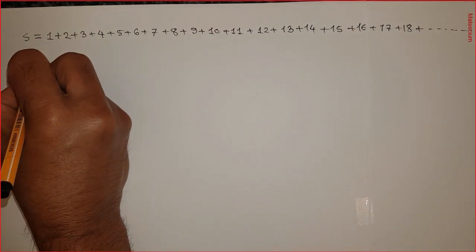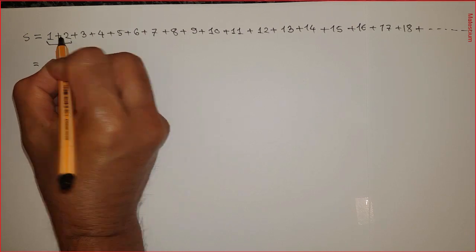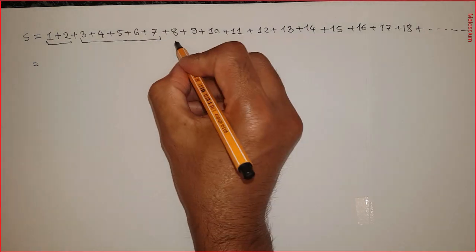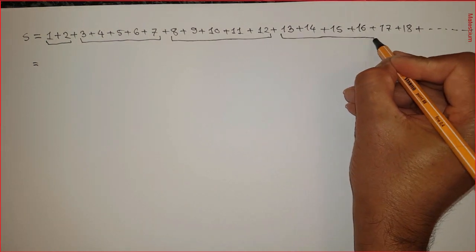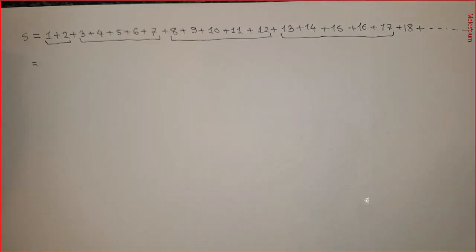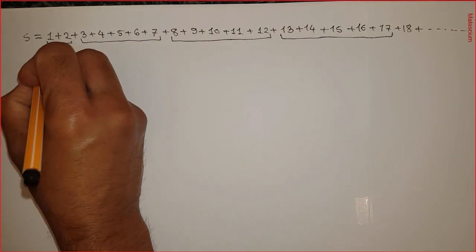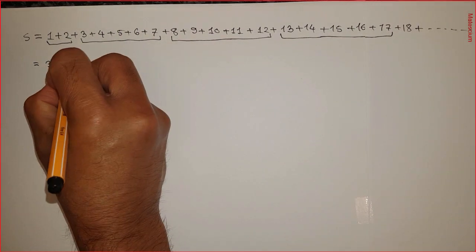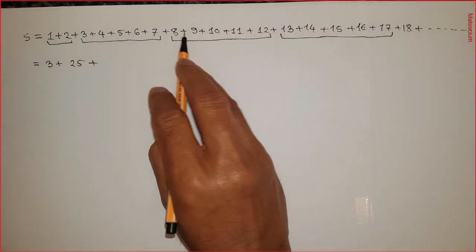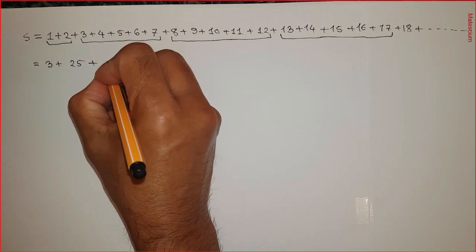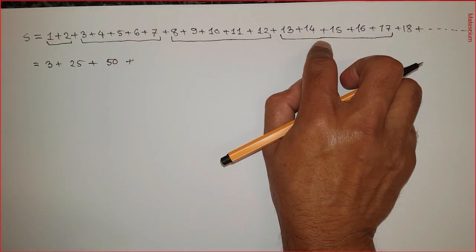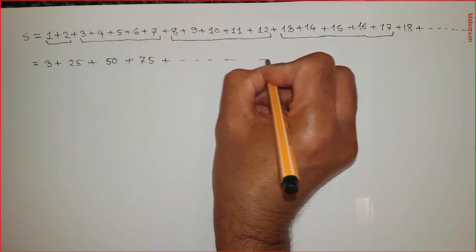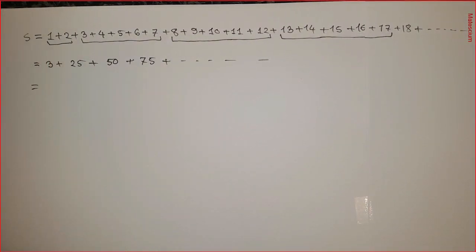Let's rewrite this series again and consider it equal to S. In this case, let's consider the first two digits together, and then the next five digits summed together, and so on up to infinity. If you do the summation: 1 plus 2 is 3, and the summation of 3, 4, 5, 6, and 7 is 25.